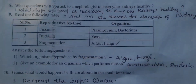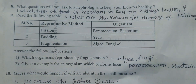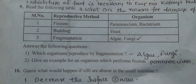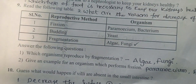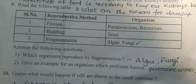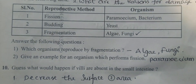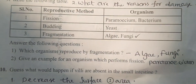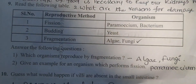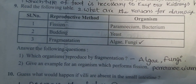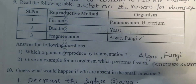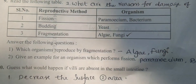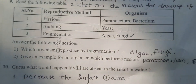Ninth question: read the following table. The table has three columns — serial number, reproductive method, and organisms. Reproductive methods listed include fission, budding, and fragmentation, with corresponding organisms such as bacteria, yeast, and fungi.